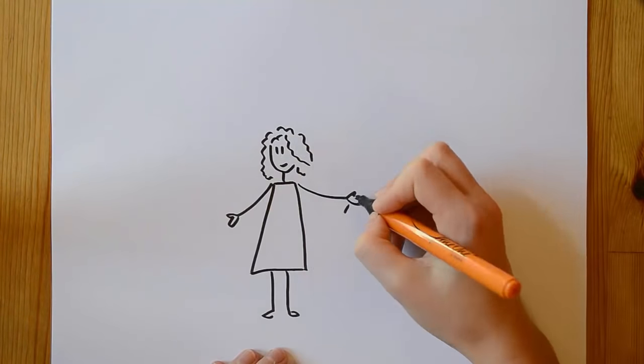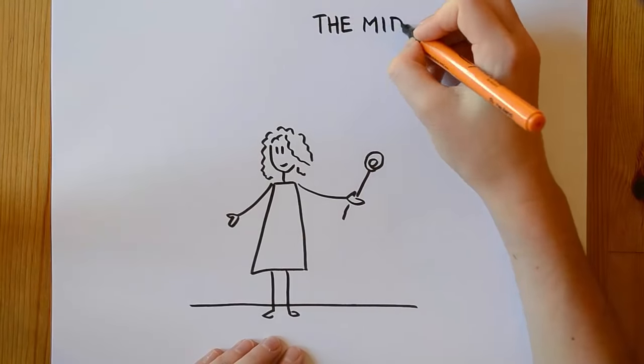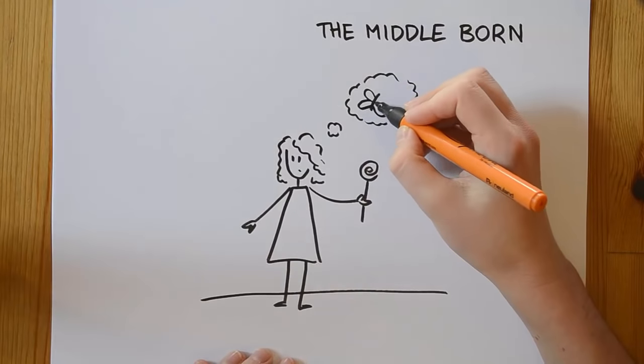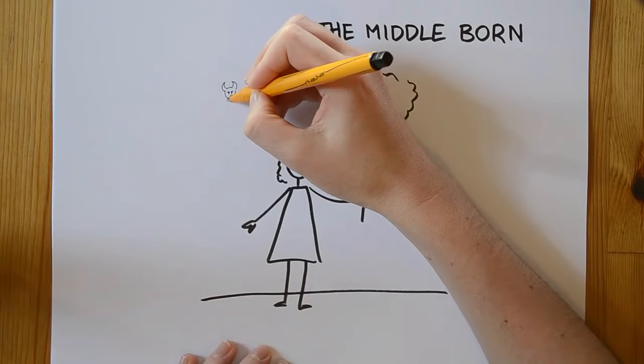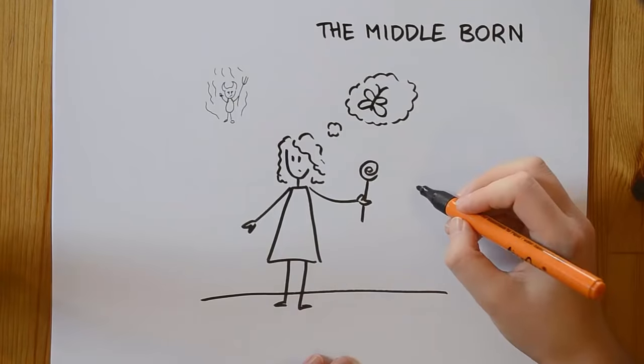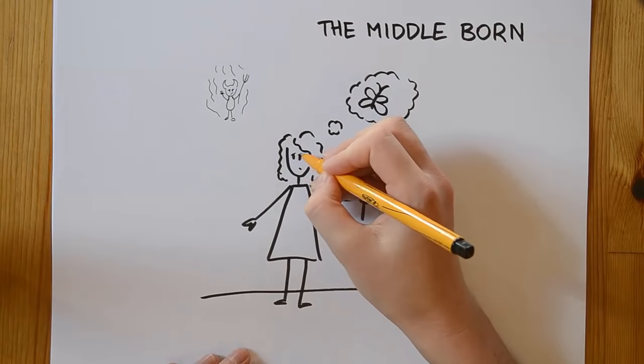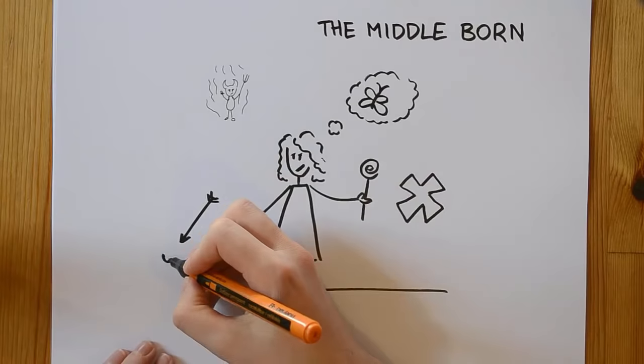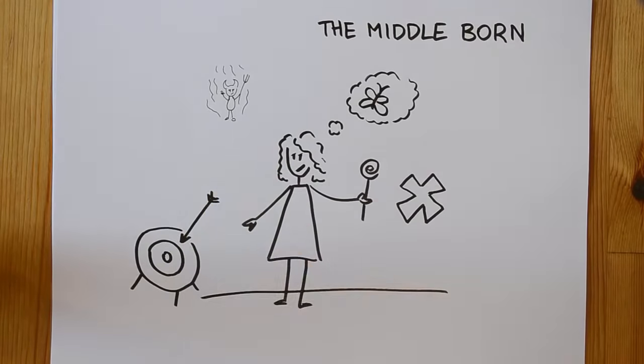What about middle born children? They are likely to be more open to fantasy and less religious. They were rated higher in impulsivity and less conscientious. Researchers discovered that the middle born children generally have more problems with self-discipline and achieve less than the first and the last born children.